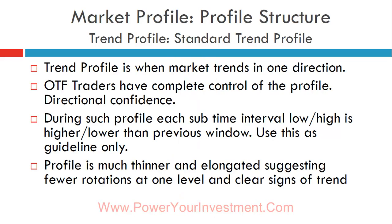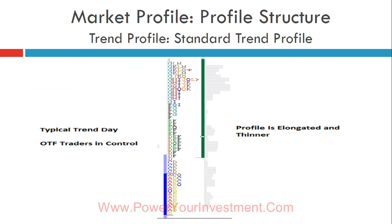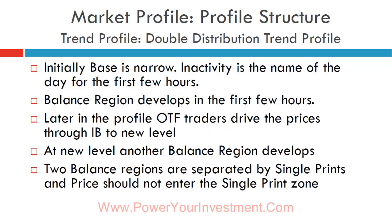There are two types of trend profile. The first is the standard trend profile — much thinner, with price just moving in one direction without pausing. The second is the double distribution trend profile. In this type, the initial base is small and narrow; the OTF trader enters, drives price high, and then price rotates again in that driven area. You get a double-distribution structure with a single print in between. In terms of bullishness, the double distribution profile is less bullish than the standard trend profile.